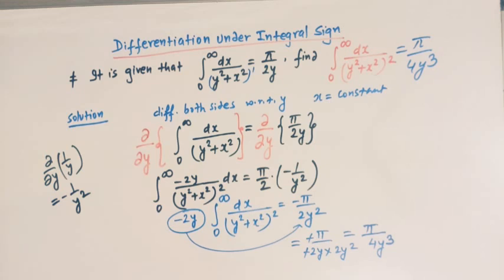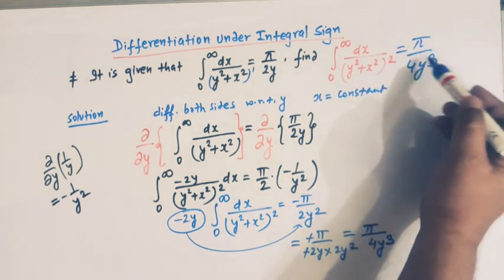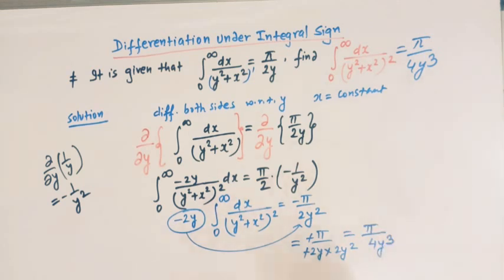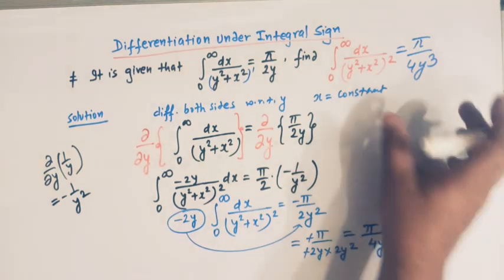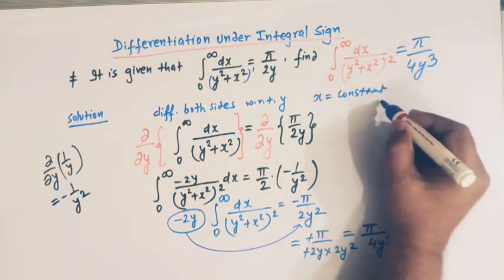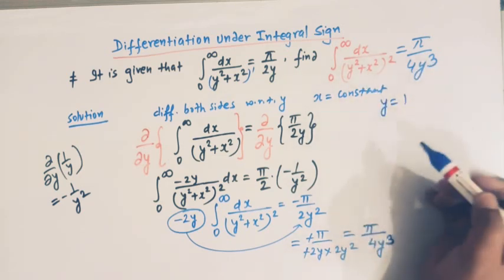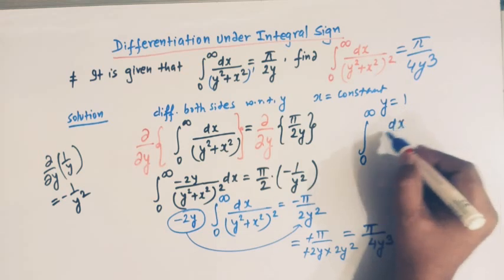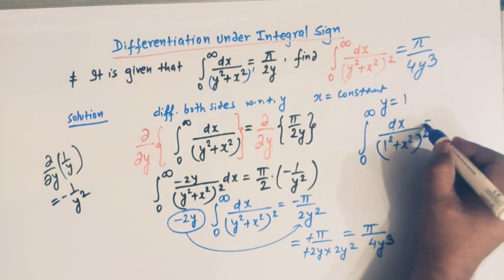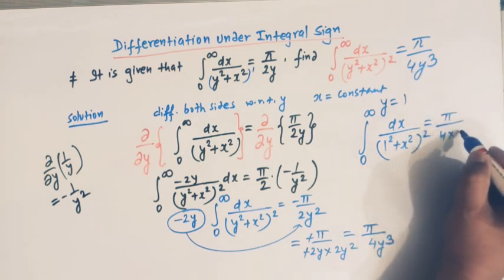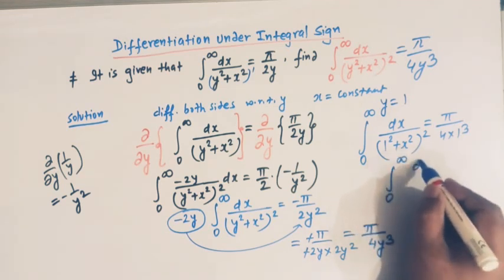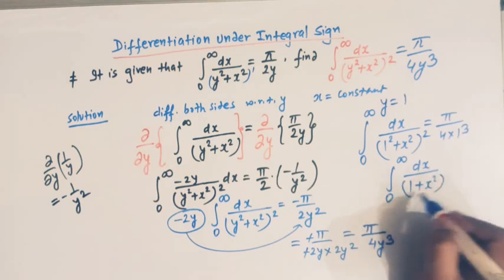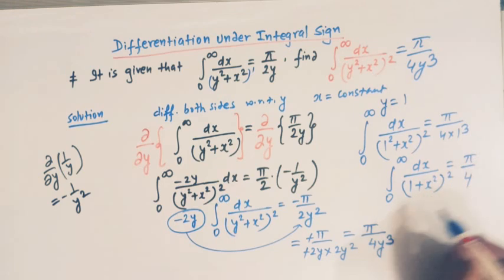So viewers, in this example we have seen how important the technique of differentiation under integral sign is. We obtained the value of the integral as pi over 4y cubed. We can derive many more integrals using this result. For example, setting y equal to 1, the integral from 0 to infinity of dx over (1 plus x squared) squared equals pi over 4. This is another important integral.